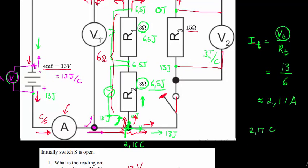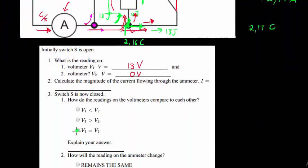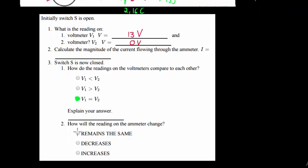So what would V1 read? Whether the switch is open or closed, V1 is the voltmeter over the battery, giving 13 volts. Voltmeter V2 measures over R3, which in the parallel configuration also has 13 volts across it. Therefore, V1 and V2 readings are the same.